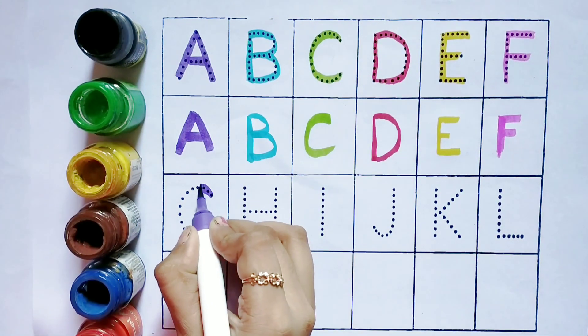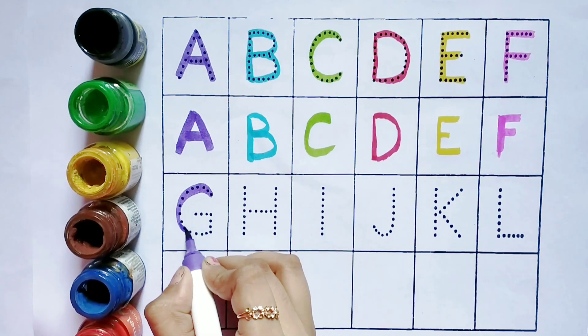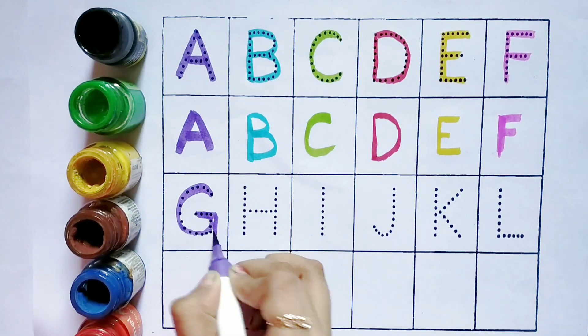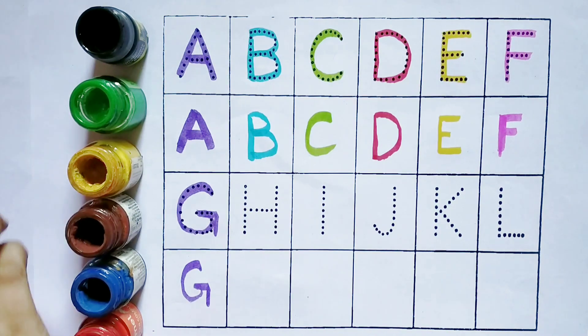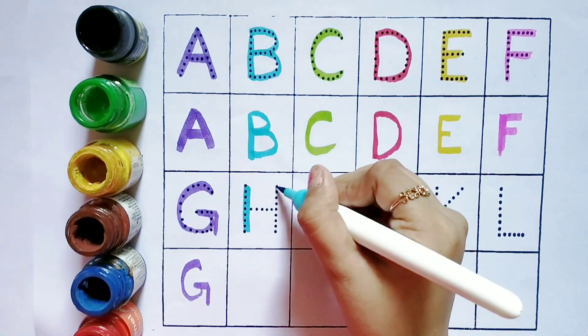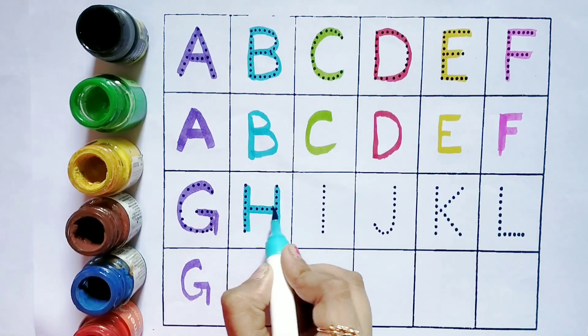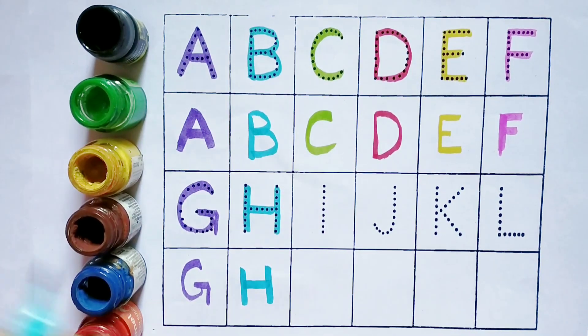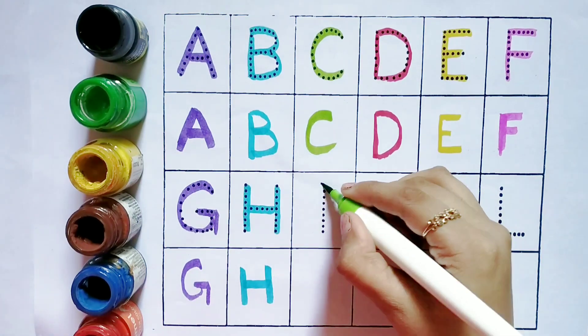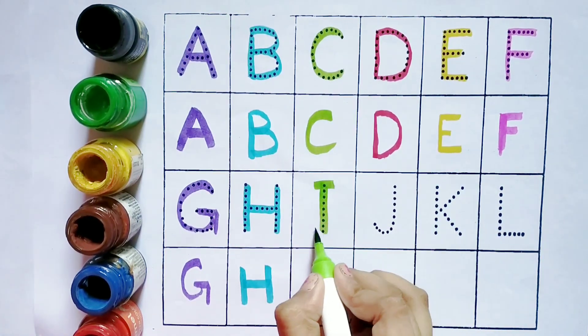G, G for grass. G, G for grass. H, H for hen. H, H for hen. I, I for ink.